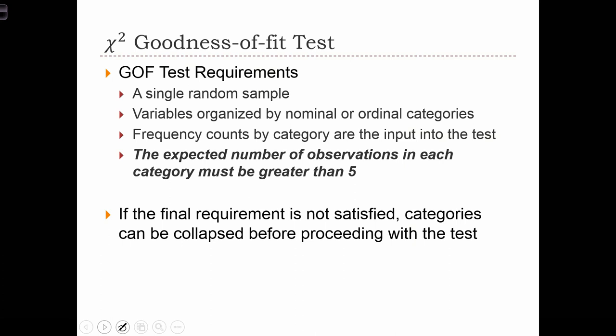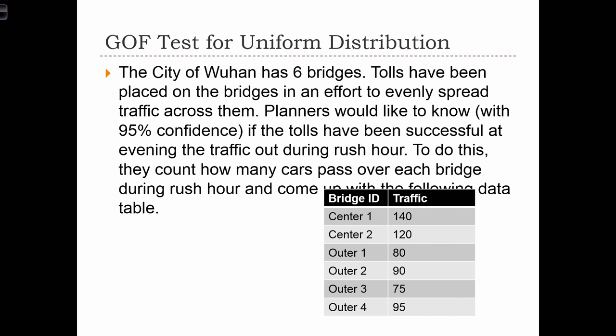An important limitation of the test is that when we calculate the expected number of observations in each category, the expected value in each category has to be greater than 5. If we compute an expected value less than 5, then categories should be collapsed before proceeding with the test. Here's an example.